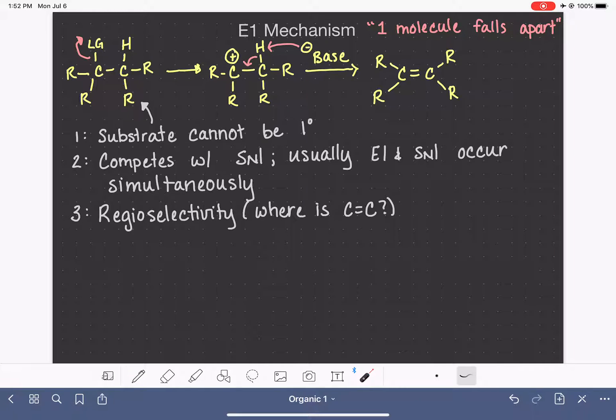However, in this reaction, we cannot control regioselectivity. For the E1 mechanism, the Zaitsev product is always the major product. And remember that the Zaitsev product is the most substituted alkene.